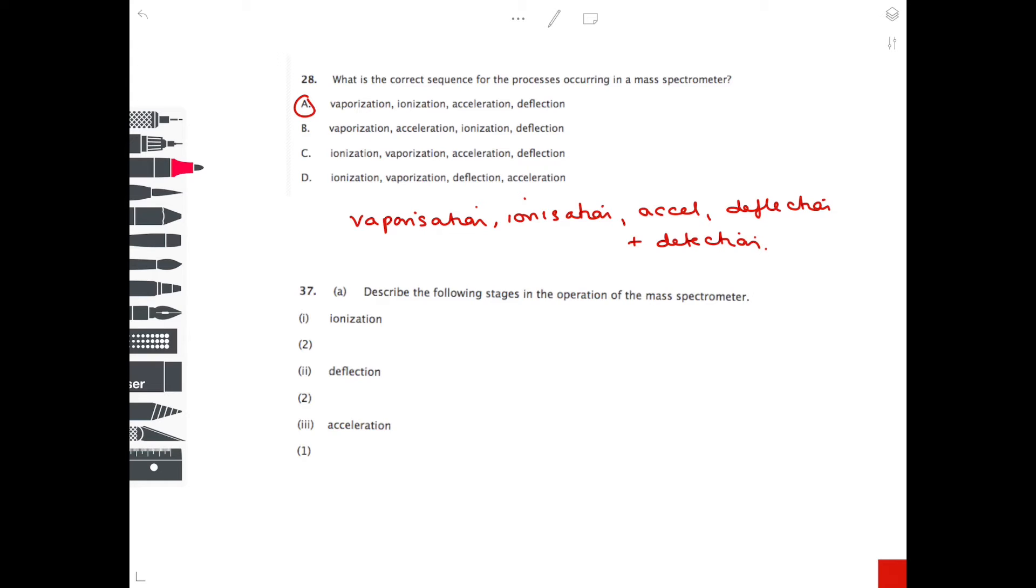Describe the following stages in the operation of a mass spectrometer. Remember that the atoms are bombarded with high speed electrons which knocks an electron away from the atom, forming a positive ion. If two electrons are knocked out, then you form a +2 charge.